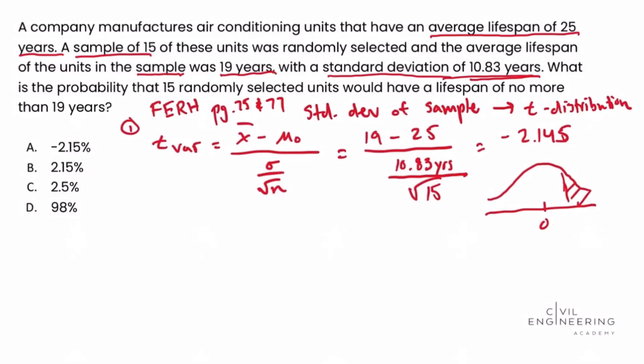So the next step is to look at the degrees of freedom. So if we see down the left side of the chart on page 77, there are numbers ranging from 1 to 30, and then the last row is infinity. And so that's the degrees of freedom, and that's going to tell us what row we need to be looking at. Degrees of freedom is equal to the sample size n minus 1. So in this case, our sample size is 15 units minus 1, so that means our degrees of freedom for this problem is 14.